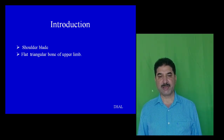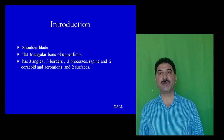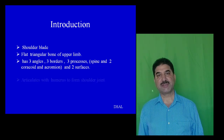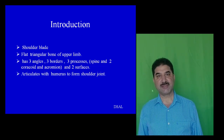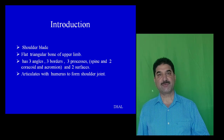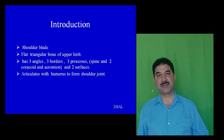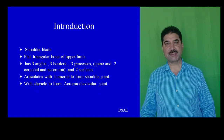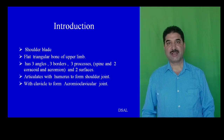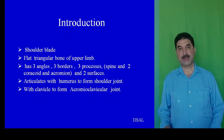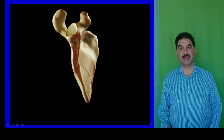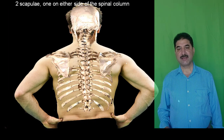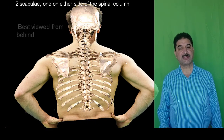Scapula is also known as shoulder blade. It is a flat triangular bone of upper limb. It has three angles, three borders, three processes and two surfaces. It articulates with upper end of the humerus to form shoulder joint, and also with lateral end of the clavicle, helping weight transmission from limb to the axial skeleton. There are two scapulae, one on either side of the spine. It is best viewed from behind, overlying the second to seventh ribs.